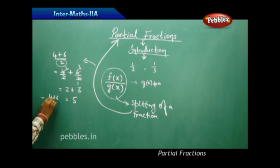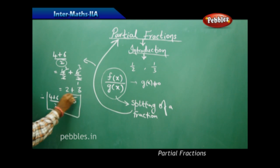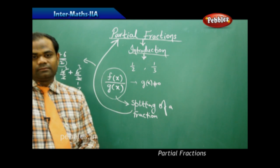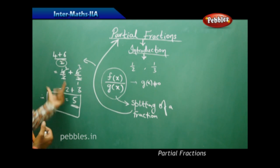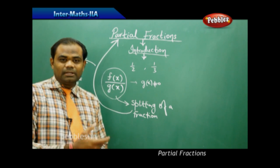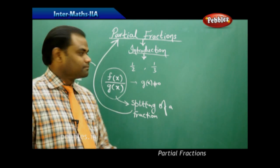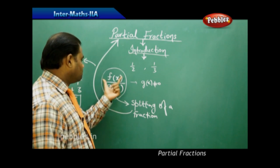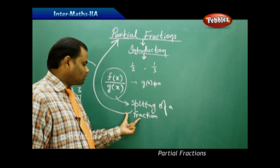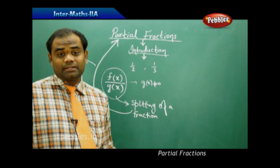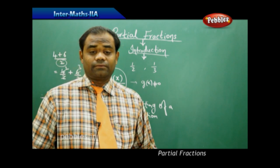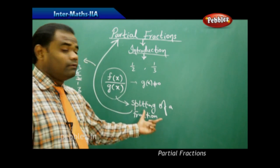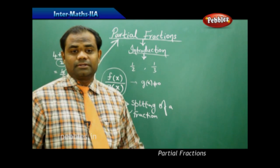So (4+6)/2 is simplified to give the value 5. This is how, though it is for numbers, we use similar methods of splitting fractions for a polynomial divided by another polynomial, where we split and hence get the partial fraction, with various fractions yielding various partial fractions.